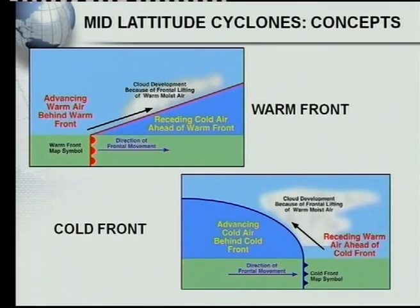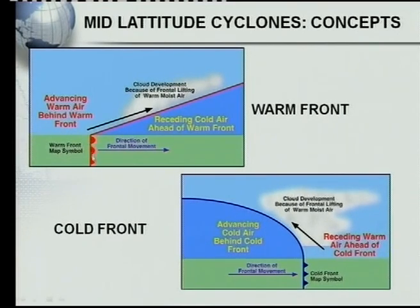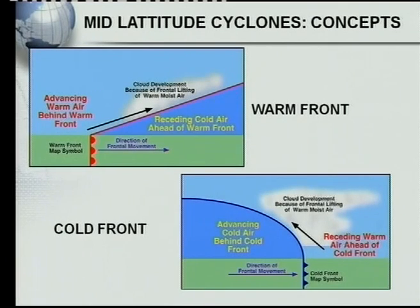Let's have a look at the warm front — your two different fronts. The warm front: what's very important is that you must know that the air behind the warm front is warm, and the air in front of the warm front is cold. That is very important. The map symbol for your warm front is as I am indicating now here. What happens is that your warm air rises over your cold air, and you can get the development of clouds and rain as well.